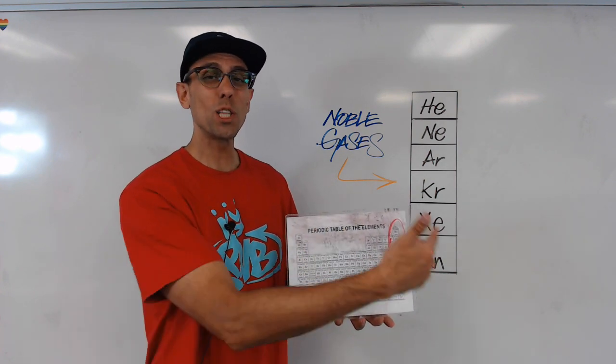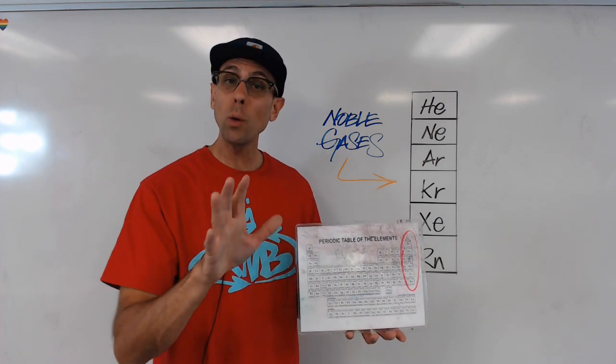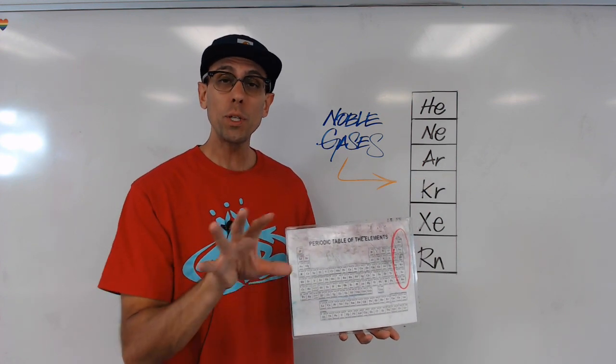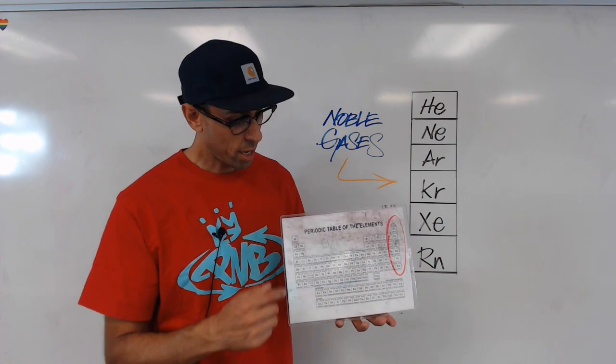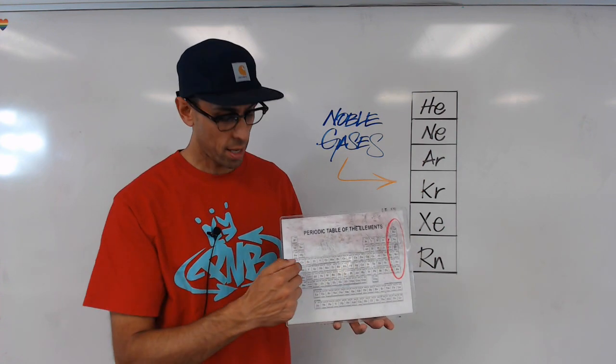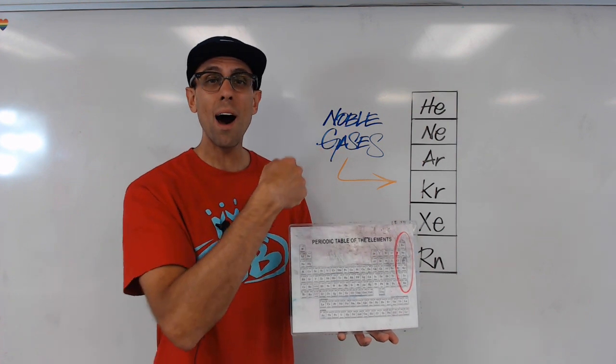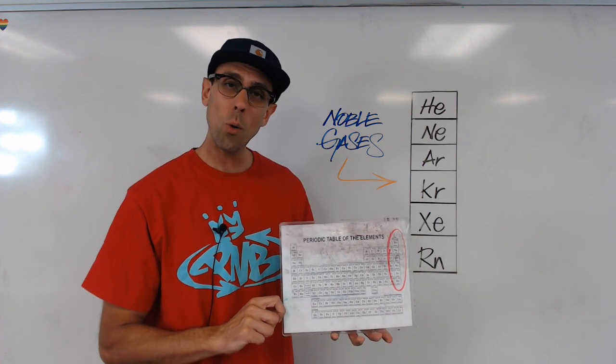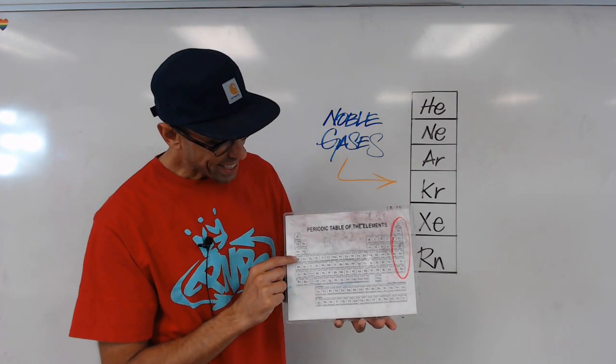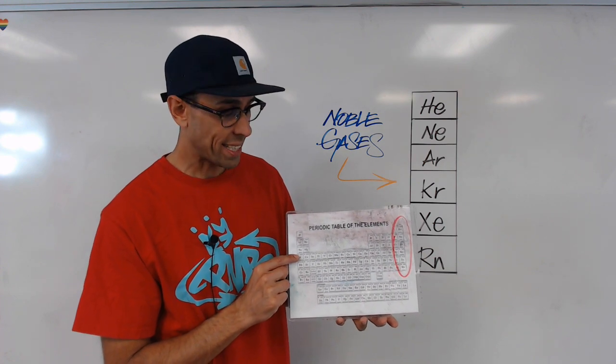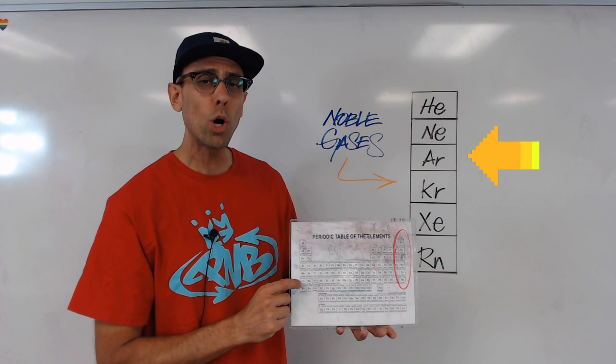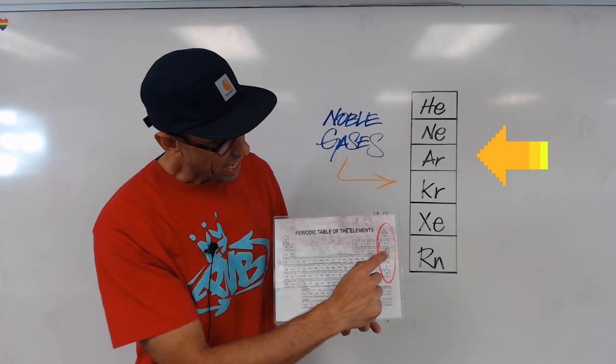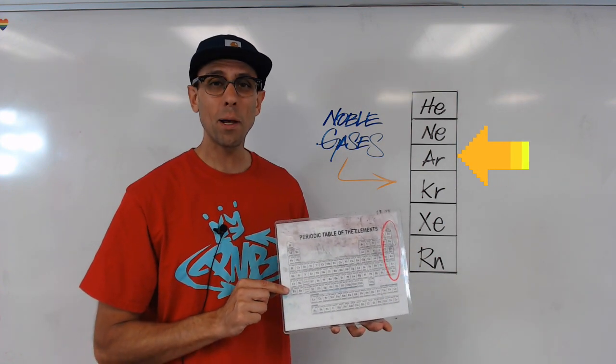But again, our instinct is to always look ahead. But we would be wrong. You see, when determining what the closest noble gas is, you've got two options. Sure, you can look across, but you can also look behind the element in question. So for potassium, which has an atomic number of 19, the closest noble gas is actually one row above it. It's argon, with an atomic number of 18.